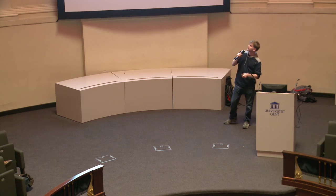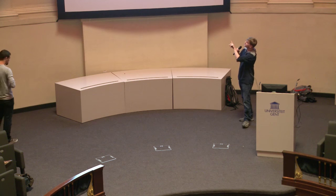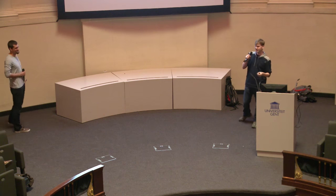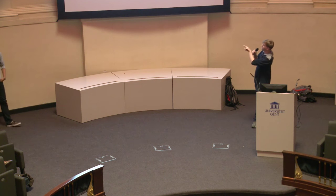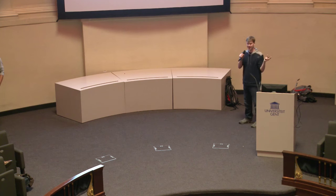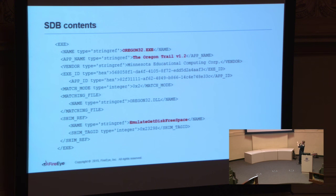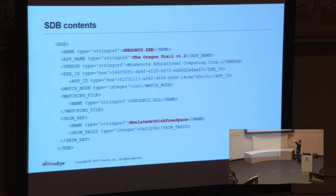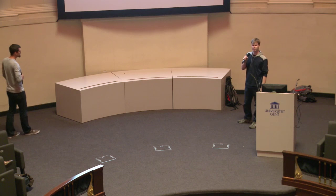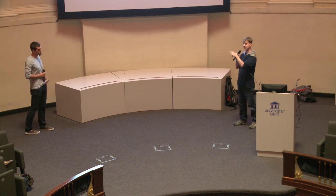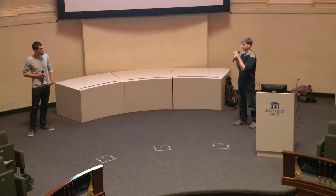Here's a shim entry for Oregon Trail. One of the fixes it's doing is — Oregon Trail has been around for quite a long time, so it doesn't know how to reference a large storage space like a terabyte drive. One of these fixes emulates it for the program so when it tries to reference something it can actually store files, et cetera. This is basically the XML we pulled out from this entry.